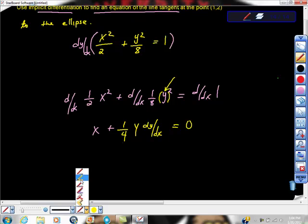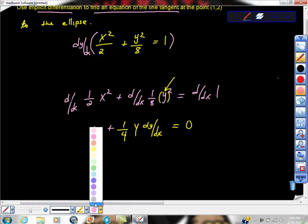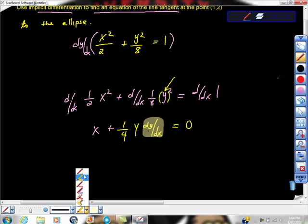Keeping in mind that what we really need to find is dy/dx so we can evaluate this. This is the part that we actually want. So to get that part, we need to move stuff over. I'm just going to add negative x to both sides.